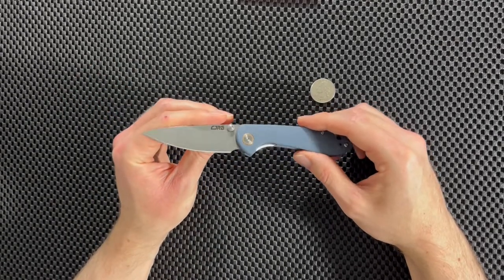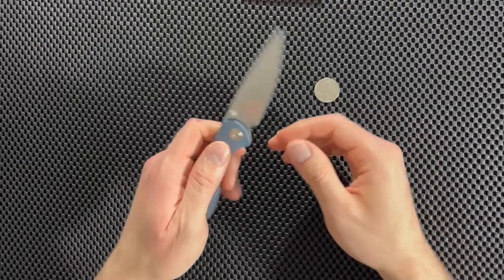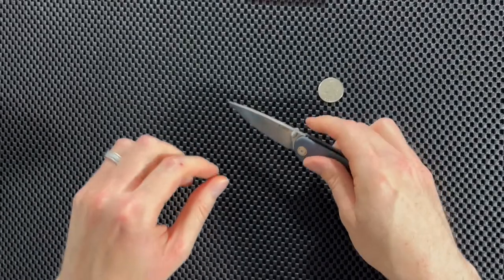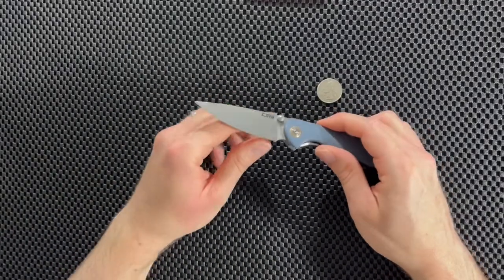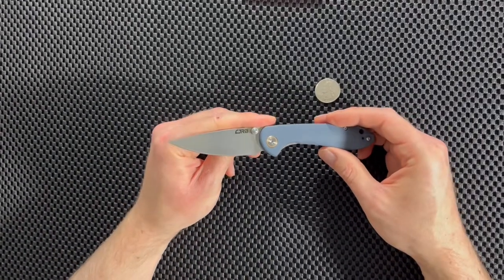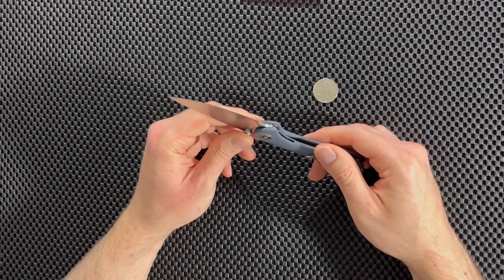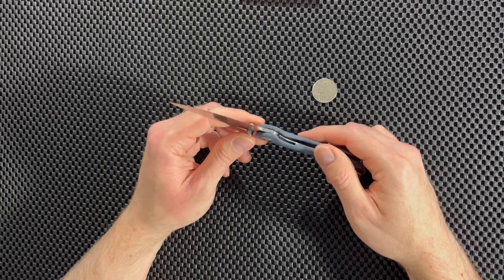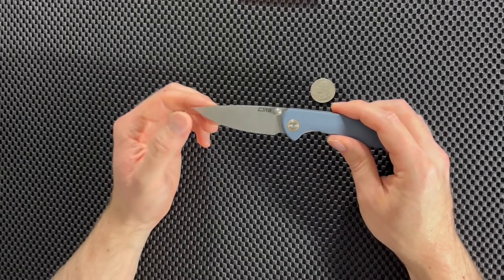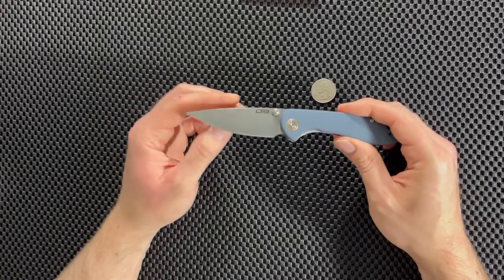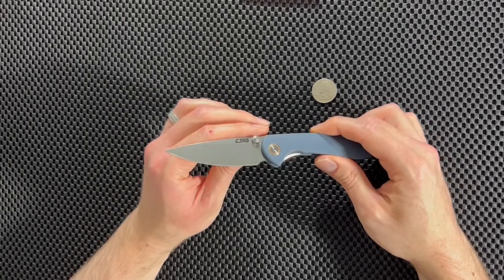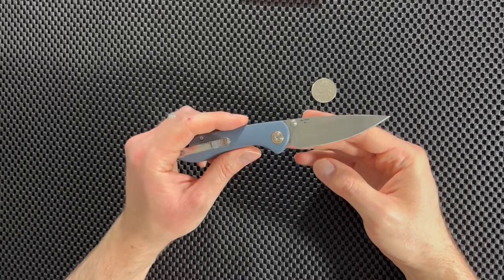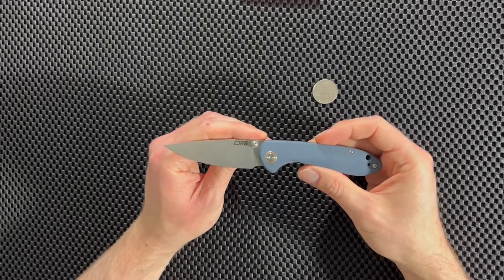Now the first thing I want to talk about is the blade steel. The blade steel that you get is, let's see it right there, D2. D2 is a very good blade steel for an affordable knife. It's very strong, and I think it's a tool steel, but anyway it holds its edge really well, and just in general getting D2 steel on an affordable knife is considered a desirable quality. So I really like that they did this knife in D2 steel. That's definitely a selling point for me.